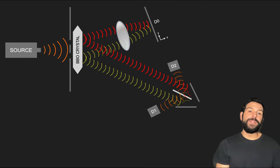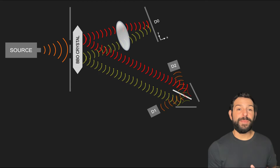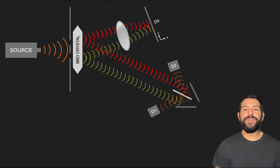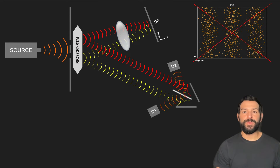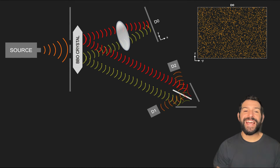Now the typical claim here is that since we can no longer tell which slit the particle went through, the interference on the screen reappears. But as we mentioned before, this is simply not true. As we previously discussed, no matter what we do to the information photon, we will never see an interference pattern on the screen.